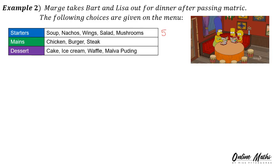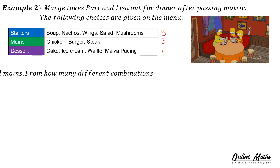For mains, there's chicken, burger or steak — in other words, 3. And then for dessert, there's cake, ice cream, waffle or malva pudding — there are 4.